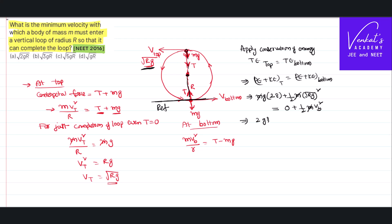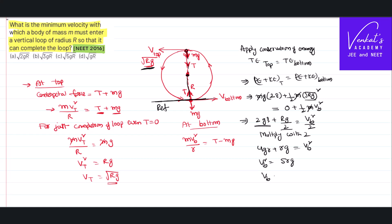Simplifying: 2gr + rg/2 = v_bottom²/2. Multiplying through by 2 gives 4gr + rg = v_bottom², so v_bottom² = 5rg. Therefore, the velocity at the bottom is √(5rg).